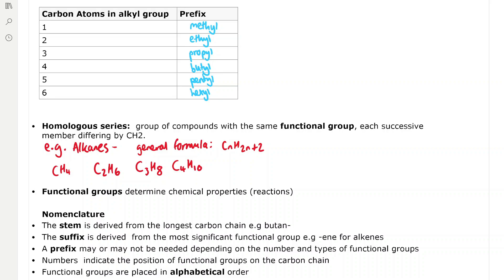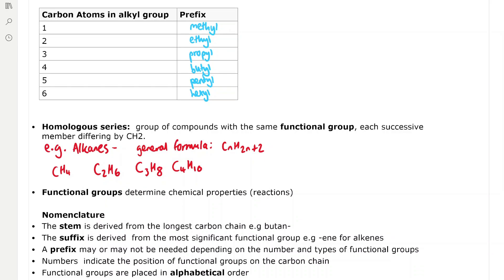The definition of a homologous series is a group of compounds with the same functional group — which is the reactive part of a compound responsible for its chemical properties — where each successive member differs by CH₂. For example, alkanes form a homologous series with the general formula CₙH₂ₙ₊₂. In the series, methane CH₄ and ethane C₂H₆ differ by CH₂.